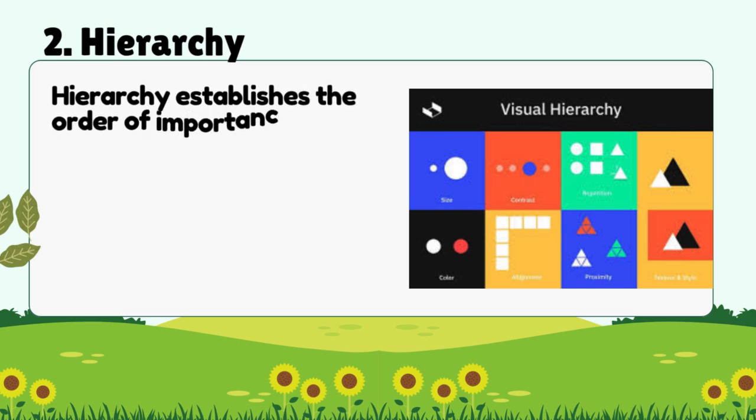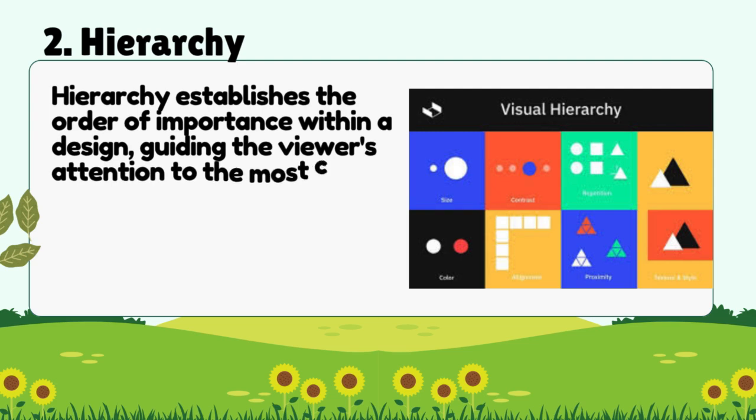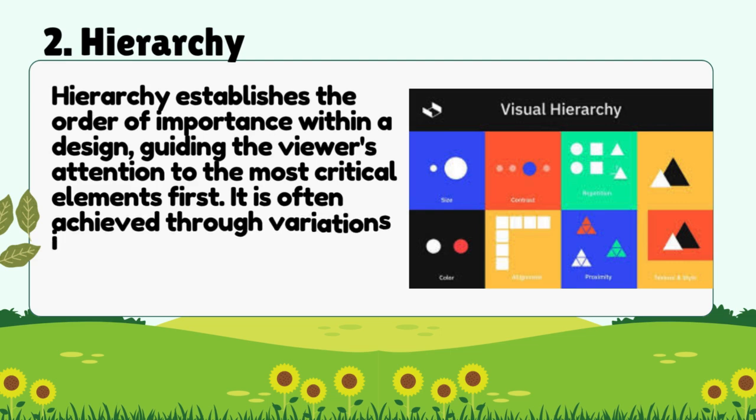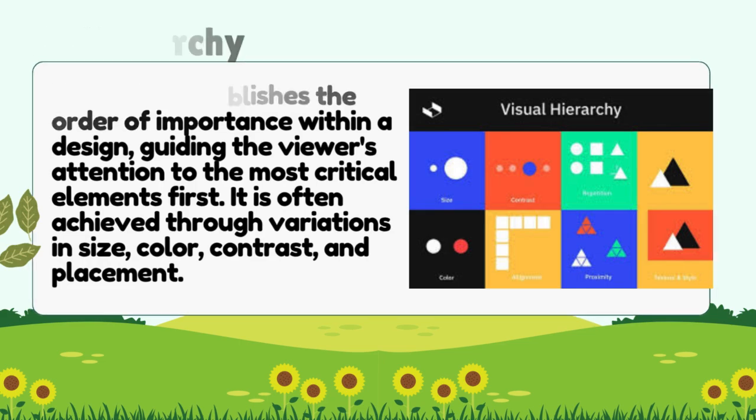2. Hierarchy: Hierarchy establishes the order of importance within a design, guiding the viewer's attention to the most critical elements first. It is often achieved through variations in size, color, contrast, and placement.